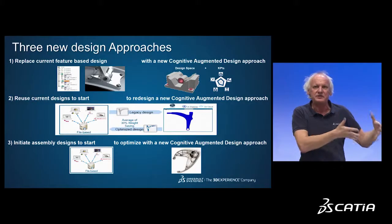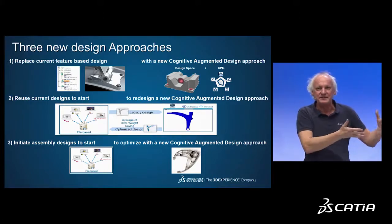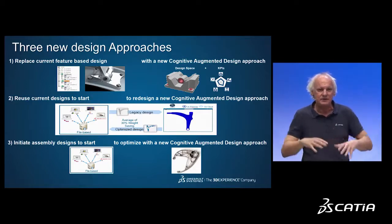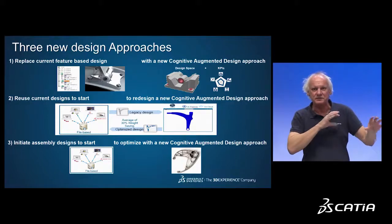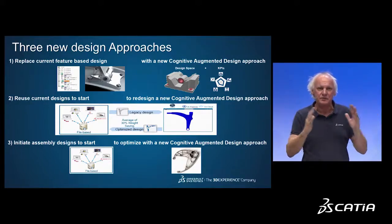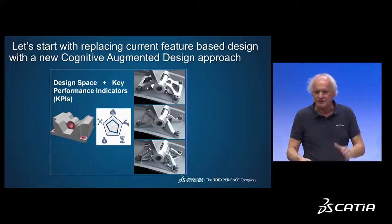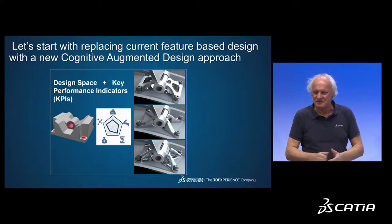There are three ways to use cognitive augmented design. First, you start from a design space specification to generate a concept. Second, you start from an actual existing part that you want to modify — the design space is just the shape of the actual part. Third, you start from an assembly made of multiple parts — maybe 20 or 100 components — and you want to reduce the number of components to minimize the cost of maintenance and assembly. Let's start with the very first scenario — images are better than words, so just follow me on this journey.